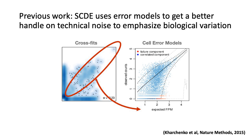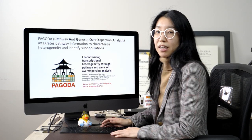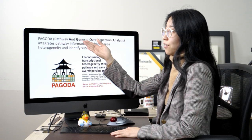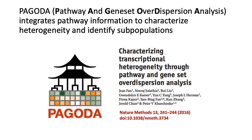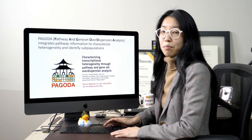In order to accommodate these technical dropouts and other sources of technical variability, previous approaches such as SCDE have tried to use error modeling to get a better handle on this technical noise, specifically to distinguish between technical dropouts and true biological non-expression. By getting a better handle on this technical noise, we can then focus on more important and interesting biological aspects of variation in our data. Building on this prior error modeling, we then developed pathway and gene set over-dispersion analysis, or PAGODA.